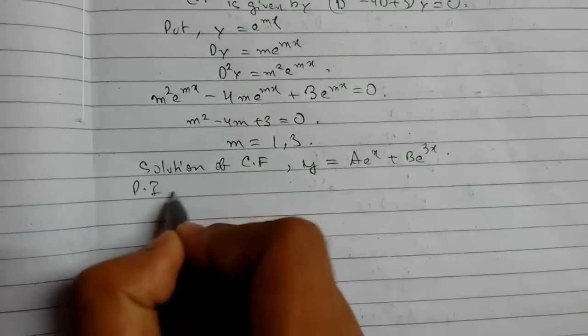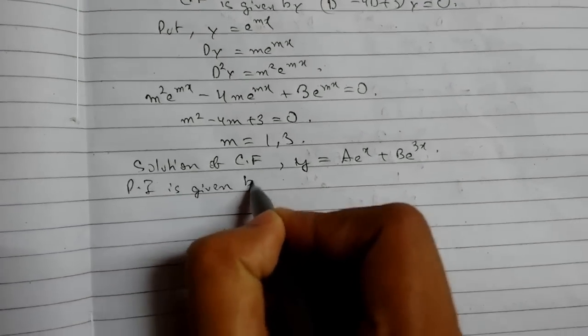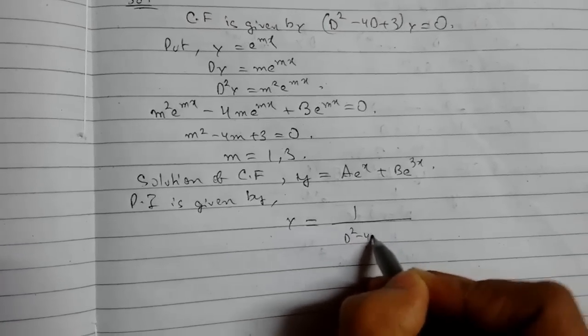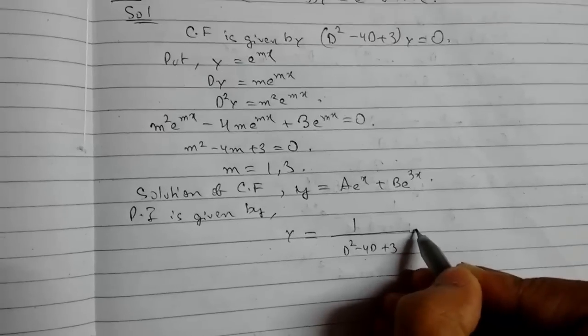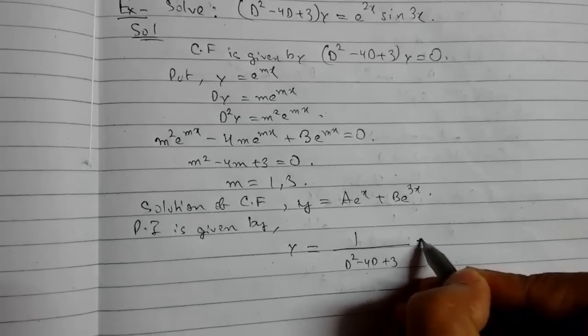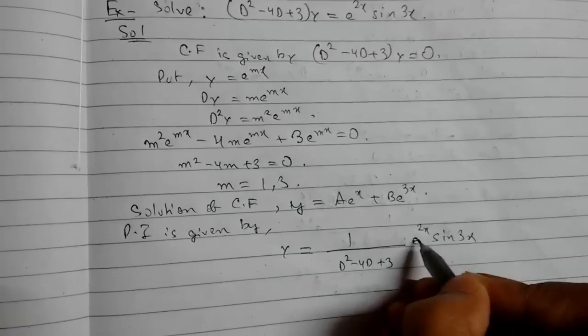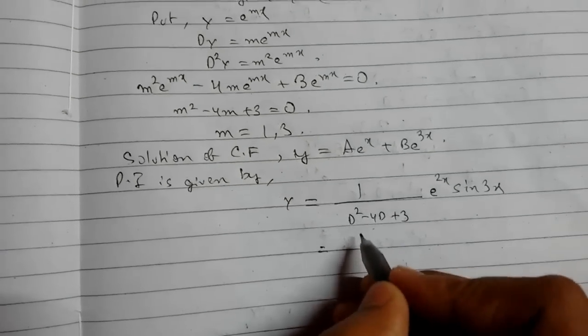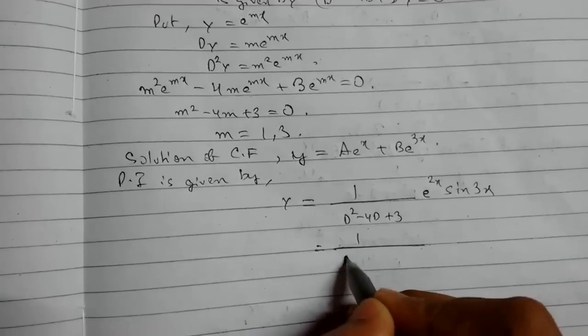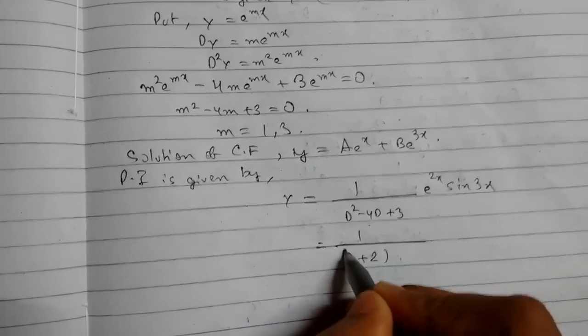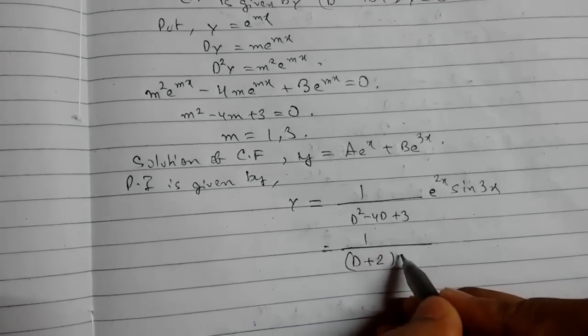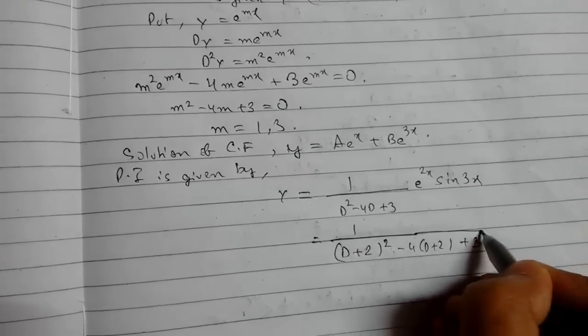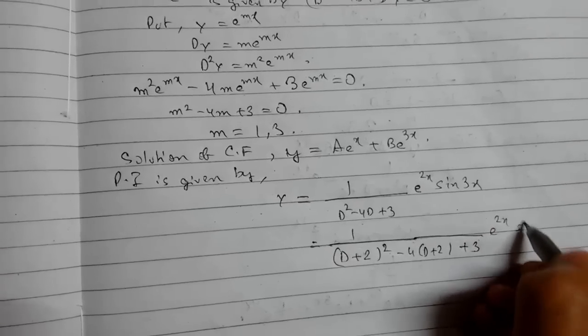Now PI is given by y = x. So we will write the equation. So here it is e^(2x) sin(3x). E^(2x) times v, so we will substitute D by 1/(D+a). a is 2, so (D+2)² - 4(D+2) + 3, times e^(2x) sin(3x).